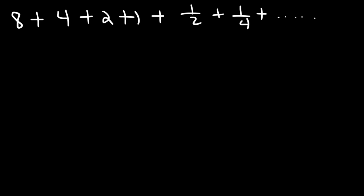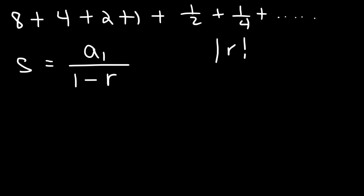There's a formula for this. The sum is going to be equal to the first term divided by 1 minus r, where r is the common ratio. And that formula works if the absolute value of r is less than 1.